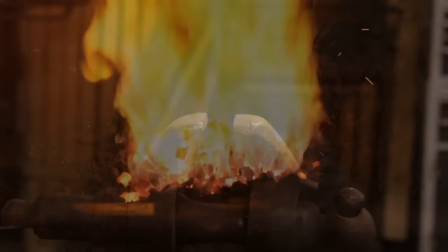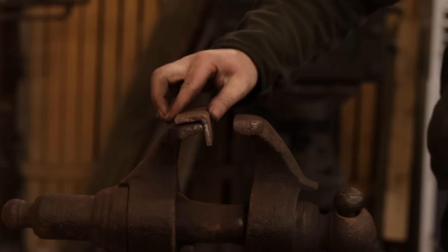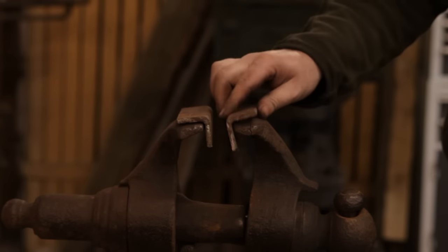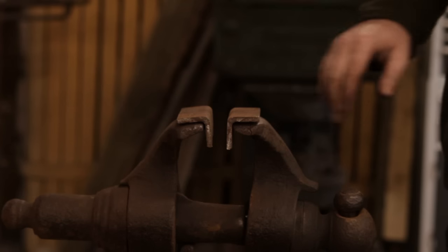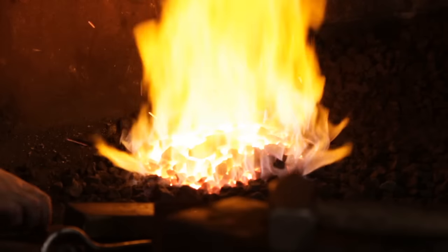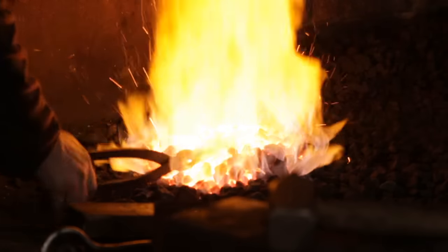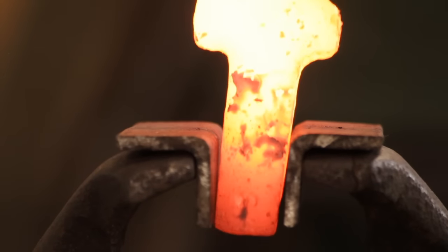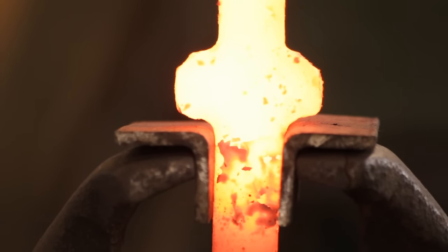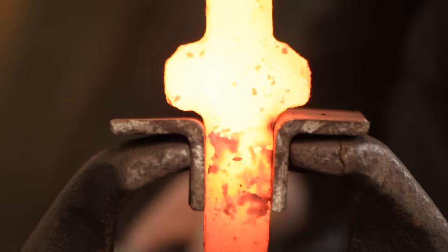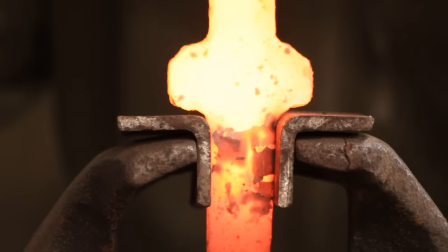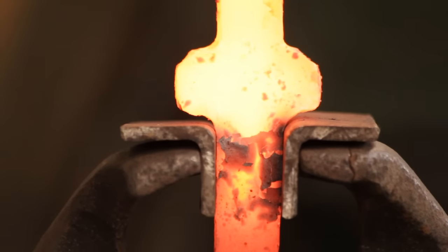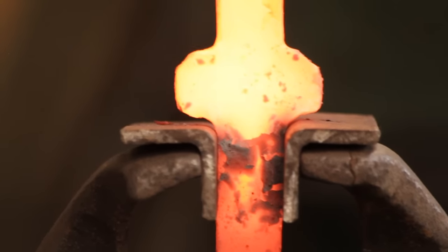So once I've rucked it out on the power hammer I will put some bits of radiused angle iron in the vice and just pop it in there and with the cross peen I will just start defining the transition and narrowing down the tongues on the pole.